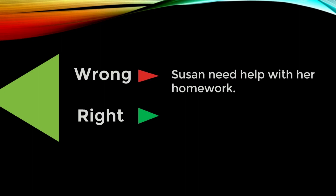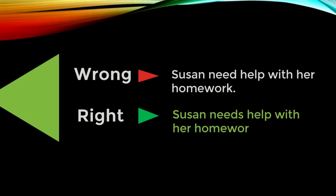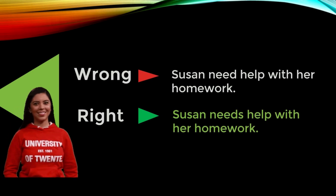'Susan need help with her homework' — the mistake is in the word 'need': subject-verb agreement. The verb has to agree with the subject. 'Susan' is a she, which means it's singular, so we would have to say: 'Susan needs help with her homework.'